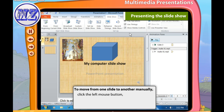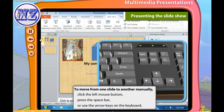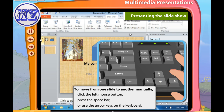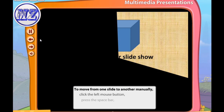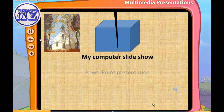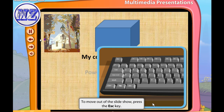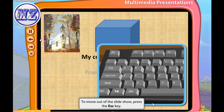You can move from one slide to another manually by choosing one of these options: clicking the left mouse button, pressing the space bar, or using the arrow keys on the keyboard. To move out of the slide show, press the Escape key.